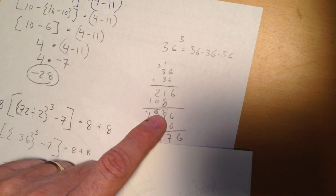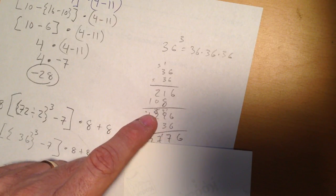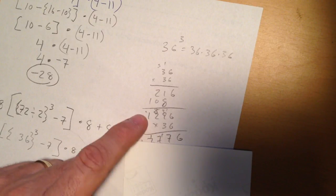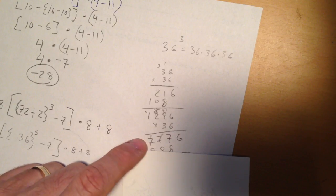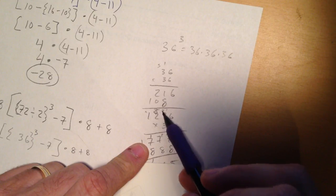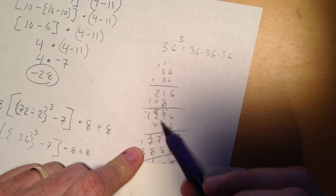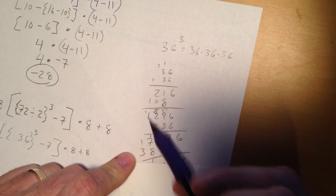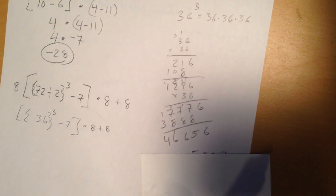So, 6 times 6 is 36, carry the 3. 6 times 9 is 54, add the 3 is 57, carry the 5. 6 times 2 is 12, add the 5, 17, carry the 1. 6 times 1 is 6, plus the 1 is 7. Then, I have to multiply out the 3. 3 times 6 is 18, carry the 1. 3 times 9 is 27, plus 1 is 28, carry the 2. 3 times 2 is 6, plus 2 is 8. And, 3 times 1 is 3, add them, and I get 46656.